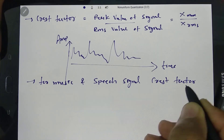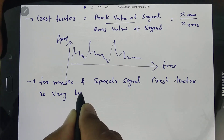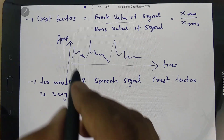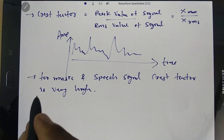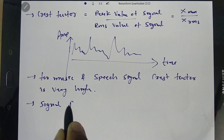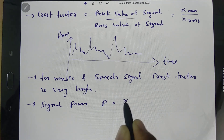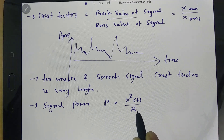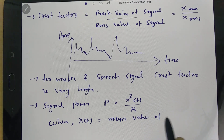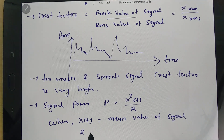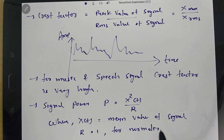For speech signals, the crest factor is very high. Now, relating this to signal power: signal power P equals x²(t) divided by R, where x(t) is the mean value of the signal and R equals 1 for normalized power.